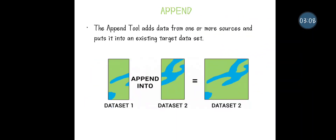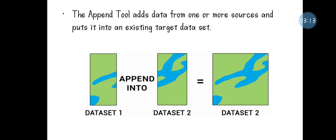The next tool is Append. Append is used to add data — along with the already existing dataset one, you are going to append dataset two. The features of both dataset one and dataset two will be combined together into a single output.